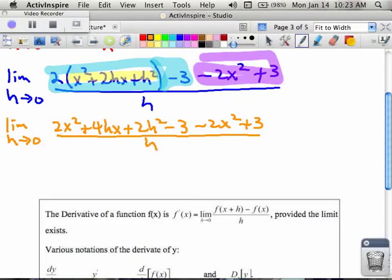And again, you should see things that go away. Anything that doesn't have an h should be going away. So the x squared terms are gone, and the negative 3 and the positive 3 are gone. And left over are only h terms.